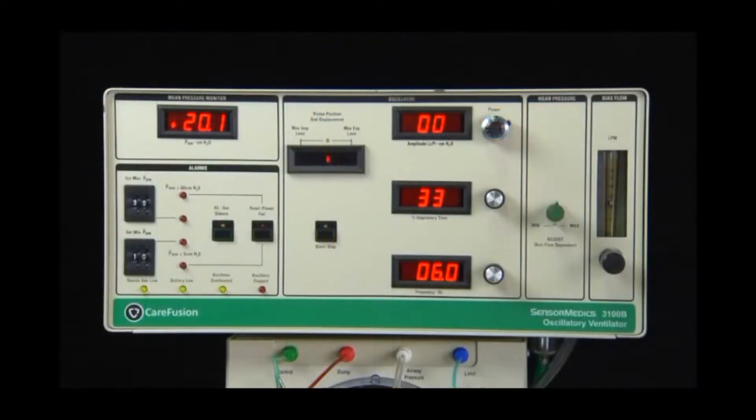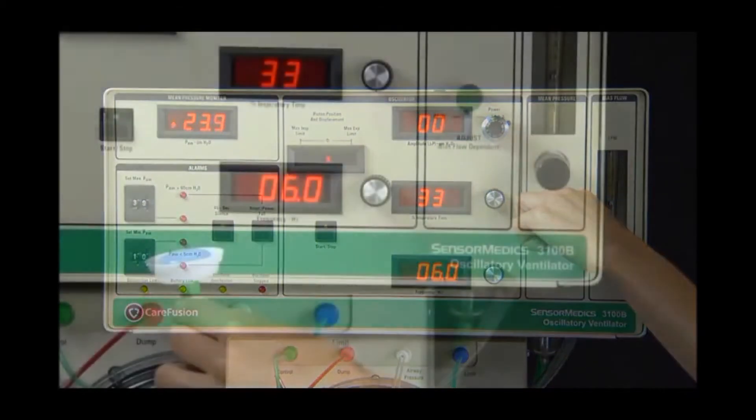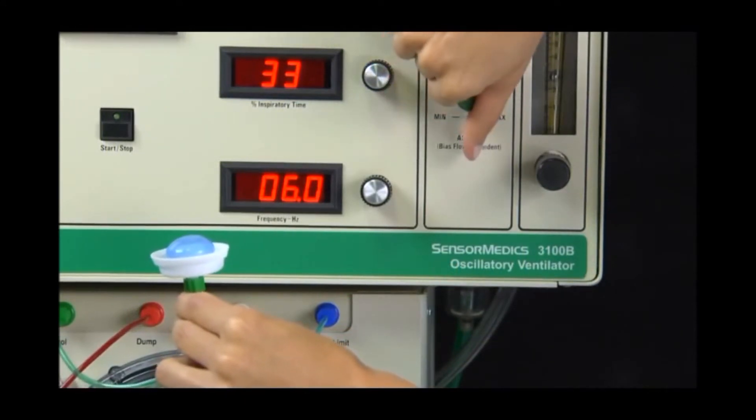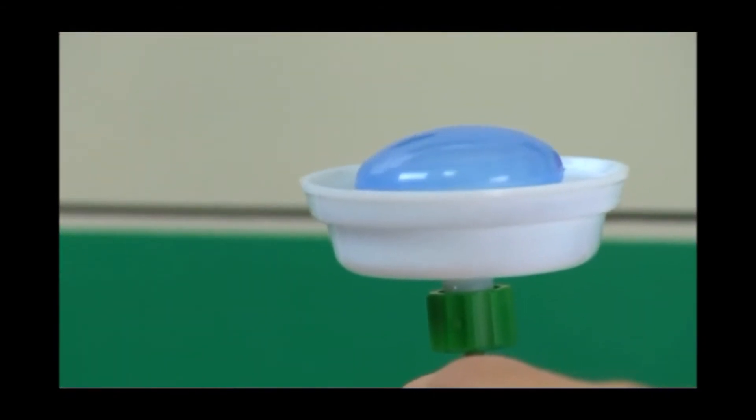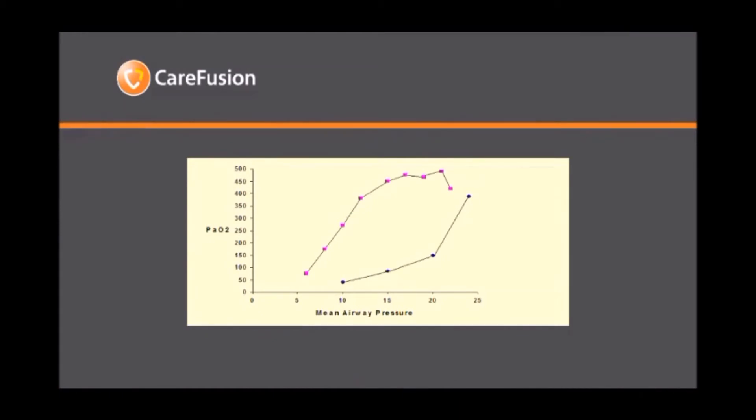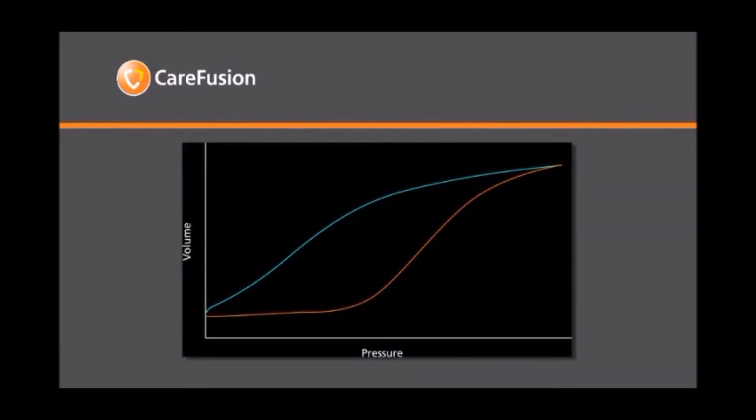The knob on the front of the instrument labeled adjust controls the mean airway pressure. Manipulation of this control changes the inflation of the balloon valve on the expiratory limb of the circuit. This results in changes to the mean airway pressure. Mean airway pressure is utilized to establish lung volume and thereby directly affects oxygenation. High frequency oscillatory ventilation strategies often refer to the decoupling of ventilation and oxygenation. These strategies are based on the assumption that the first priority is given to establishing adequate lung recruitment.